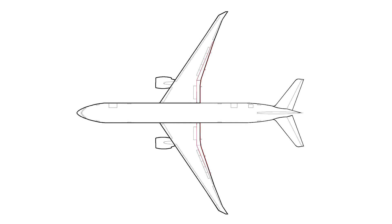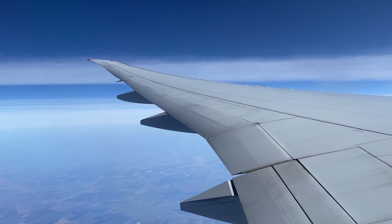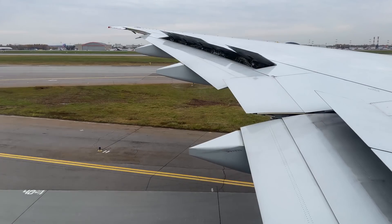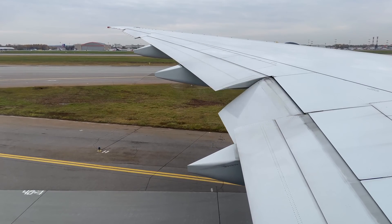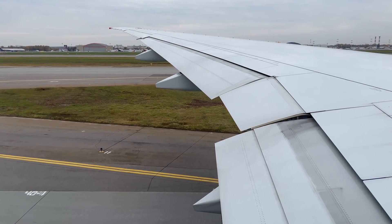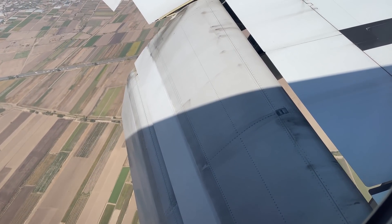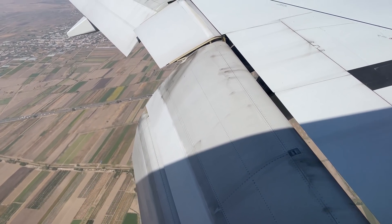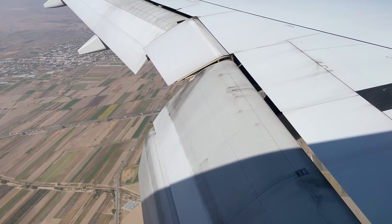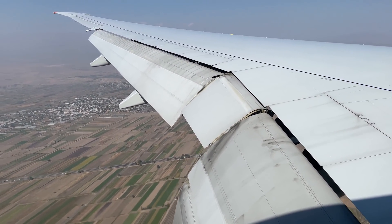Flaps are surfaces located on the trailing edge of the wing. When retracted, they are folded and pressed against the wing so it looks like a solid structure. At low speeds, for example on takeoff, when additional lift is required from the wing, the flaps are extended. This is very noticeable on the outside — large panels seem to hang down from the trailing edge. This makes the wing much larger in area, and also changes its aerodynamic capabilities, creating lift.